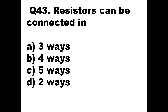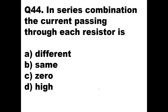Question 43: Resistors can be connected in how many ways? We have studied that resistors can be connected in series and in parallel, so there are two ways to connect resistors. Option D — two ways — is the right answer.